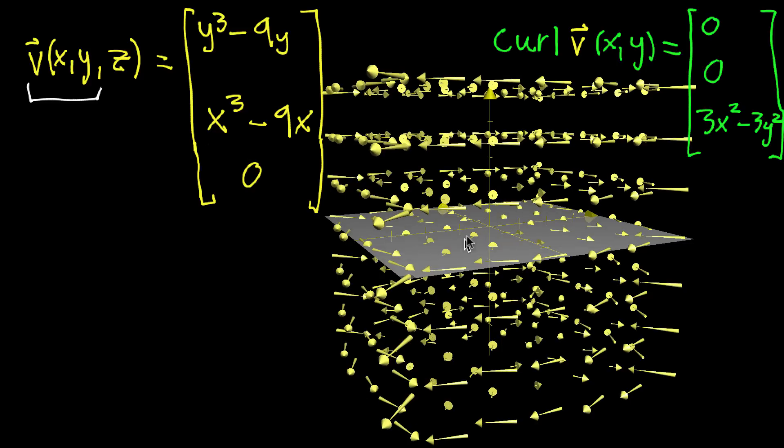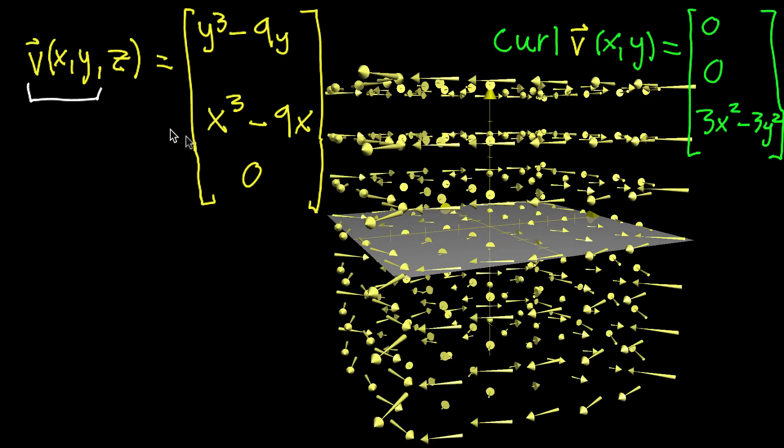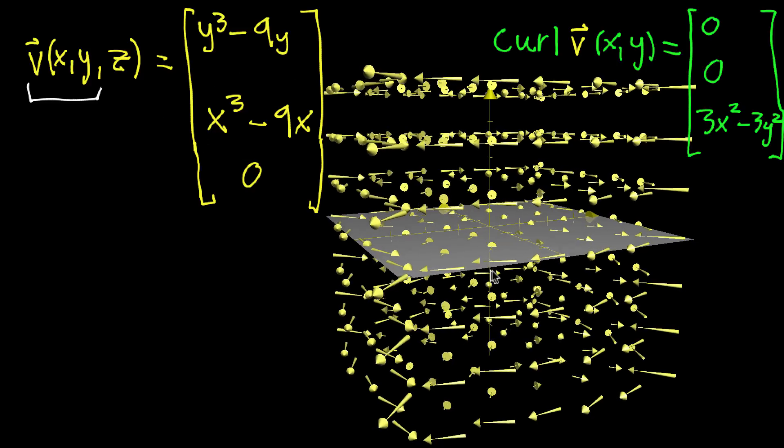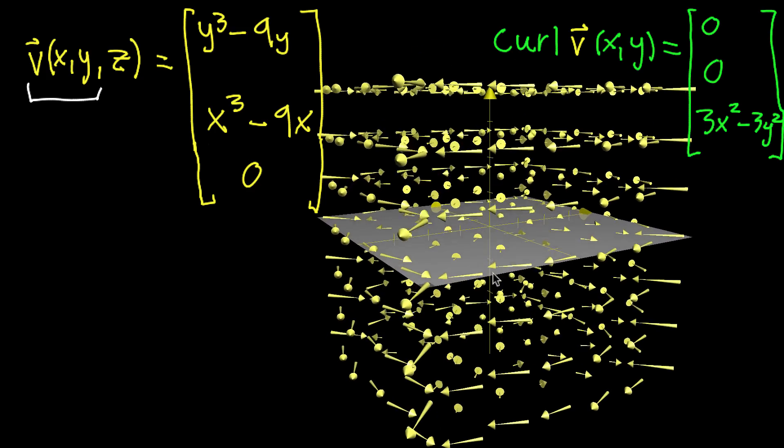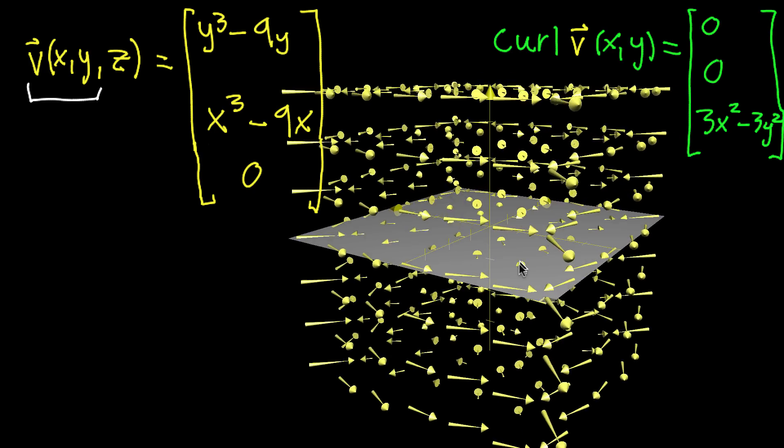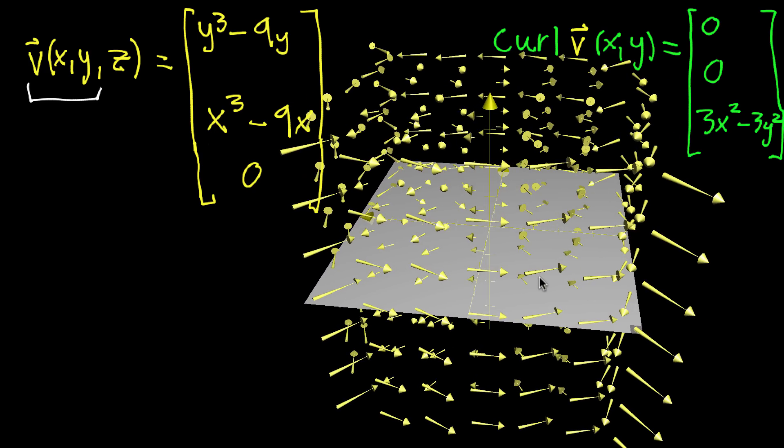So as three dimensional vector fields go, this one is only barely a three dimensional vector field. It's kind of phoning it in, as far as three dimensional vector fields are concerned. But it'll be quite good for our example here. Because now, if we start thinking of this as representing a three dimensional fluid flow,